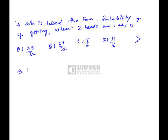At least 2 heads: one case is 2 heads and 3 tails, and another is 3 heads and 1 tail, and 4 heads and 1 tail. So these 3 cases are possible for at least 2 heads and 1 tail.